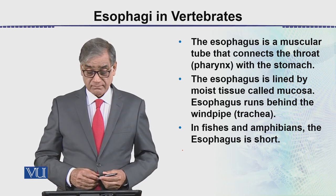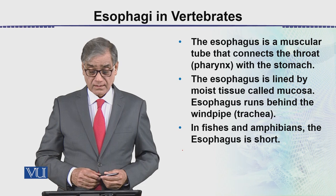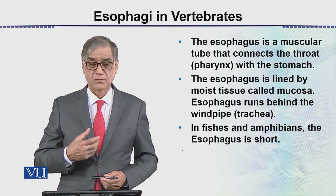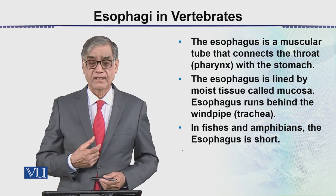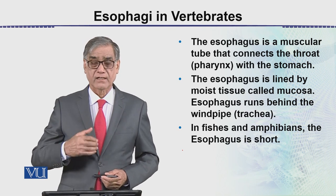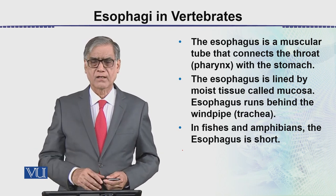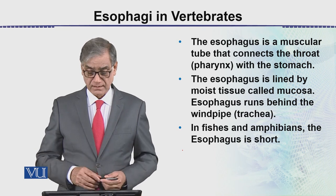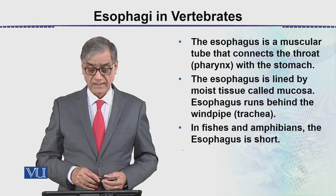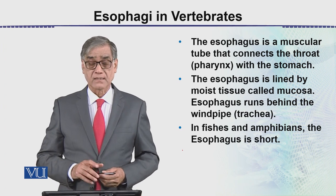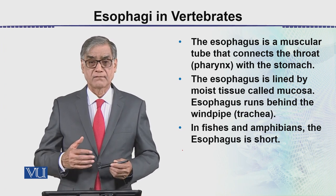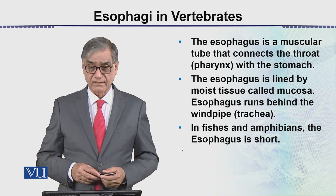The esophagus runs behind the windpipe — this is our windpipe — and it is on the back side; they run parallel to each other. In fish and amphibians, the esophagus is short because of the absence of the neck.